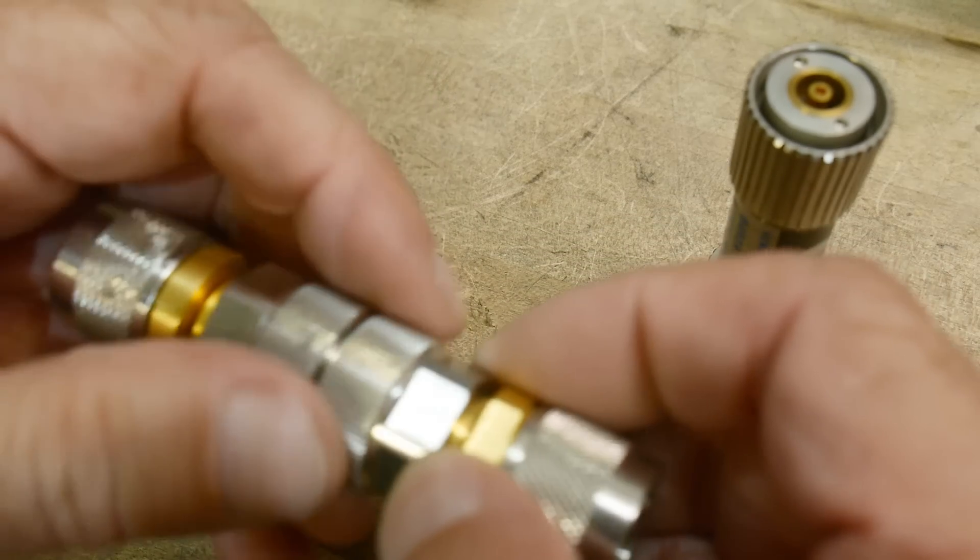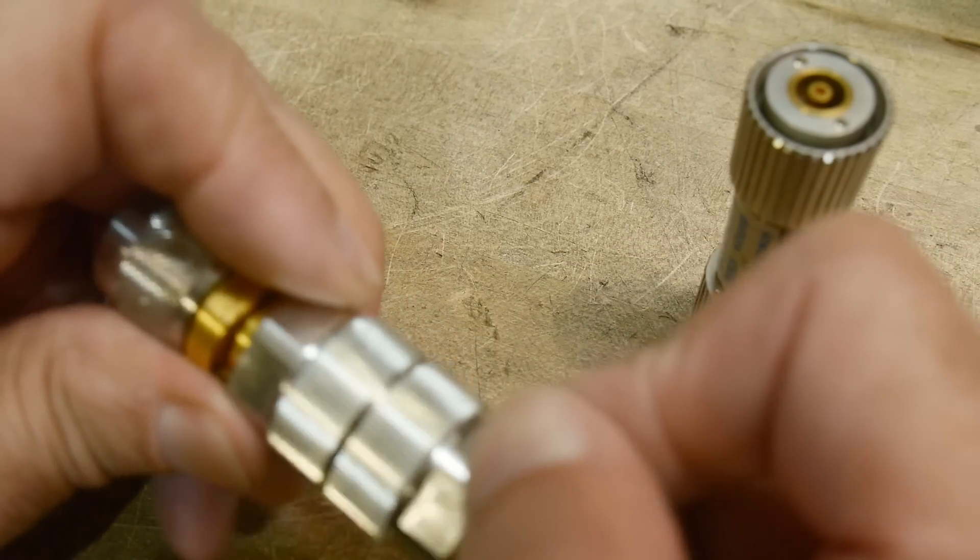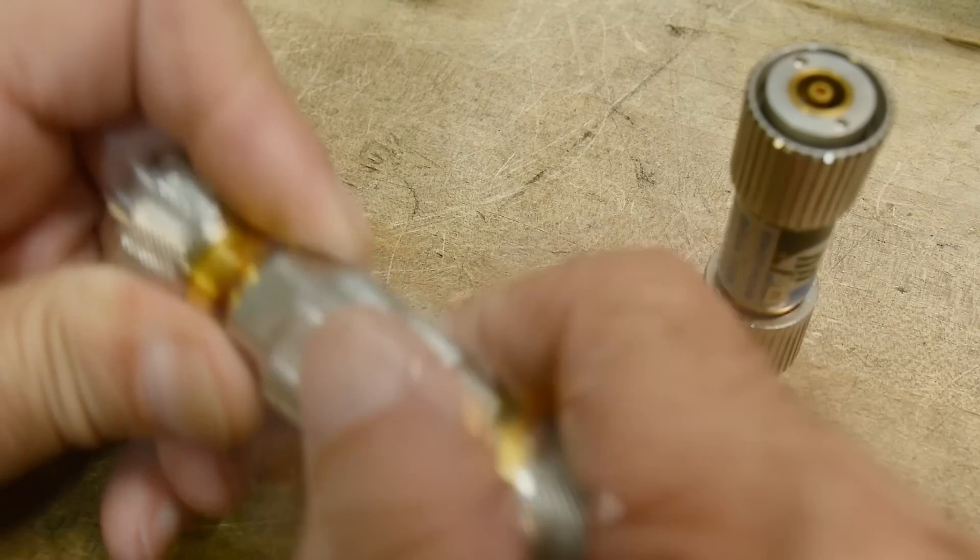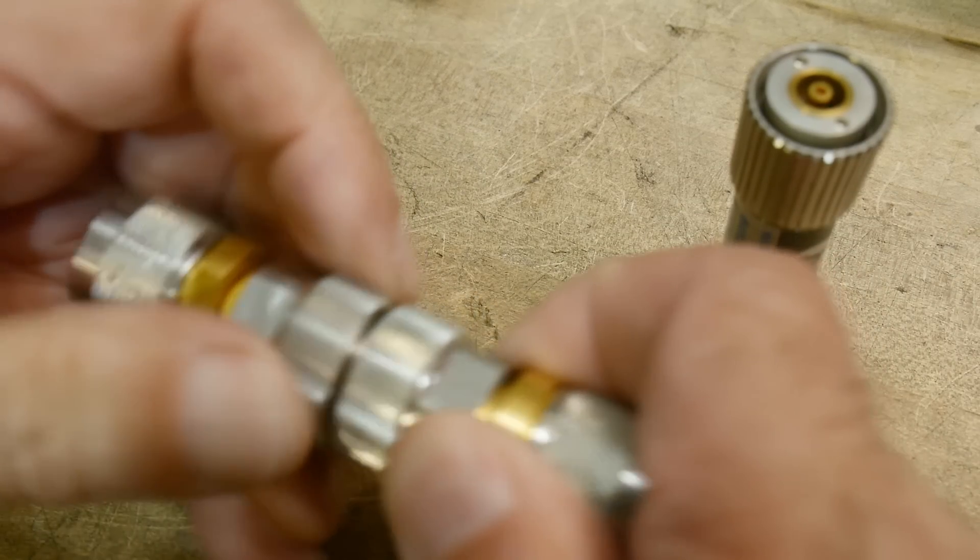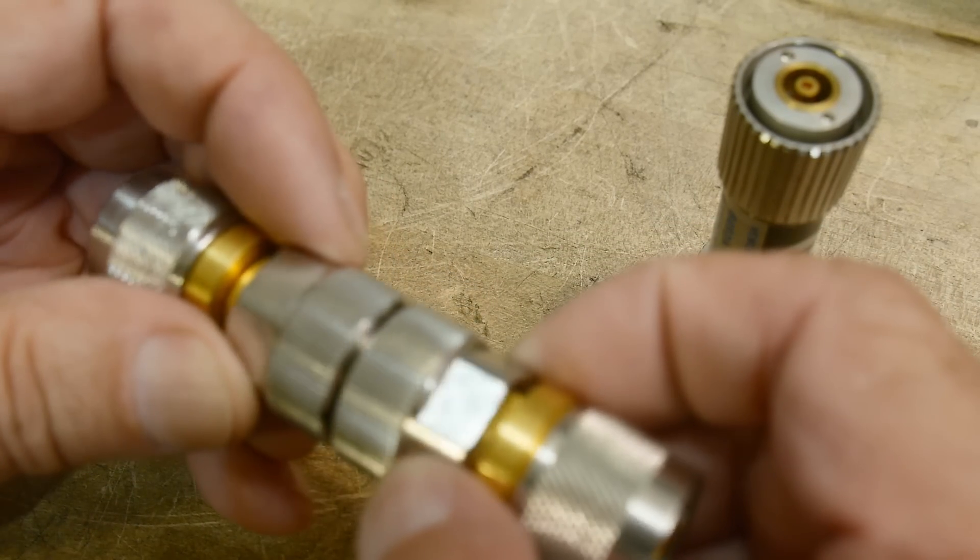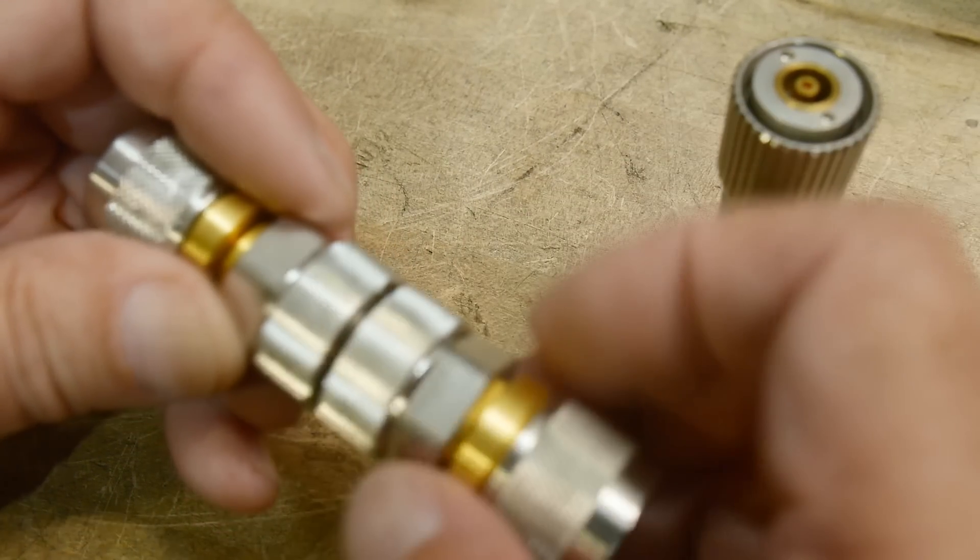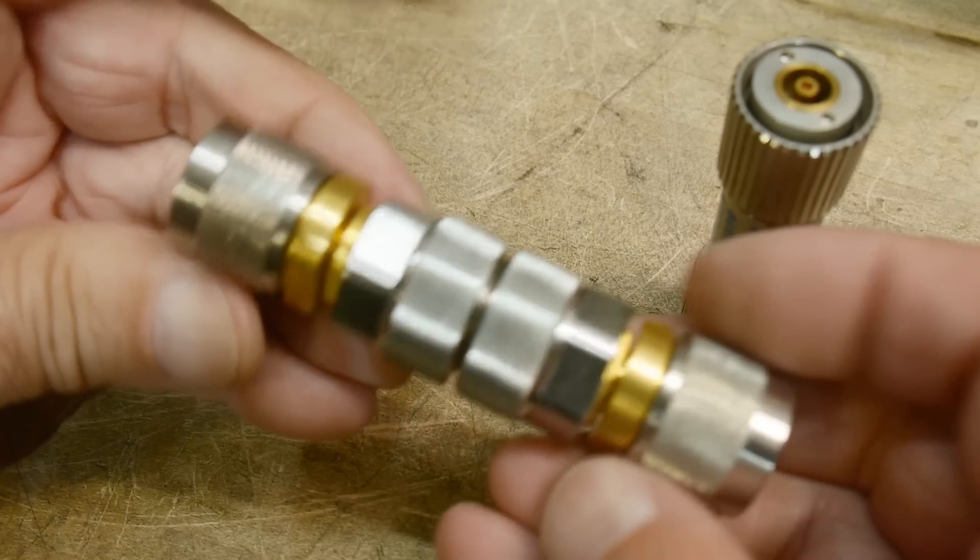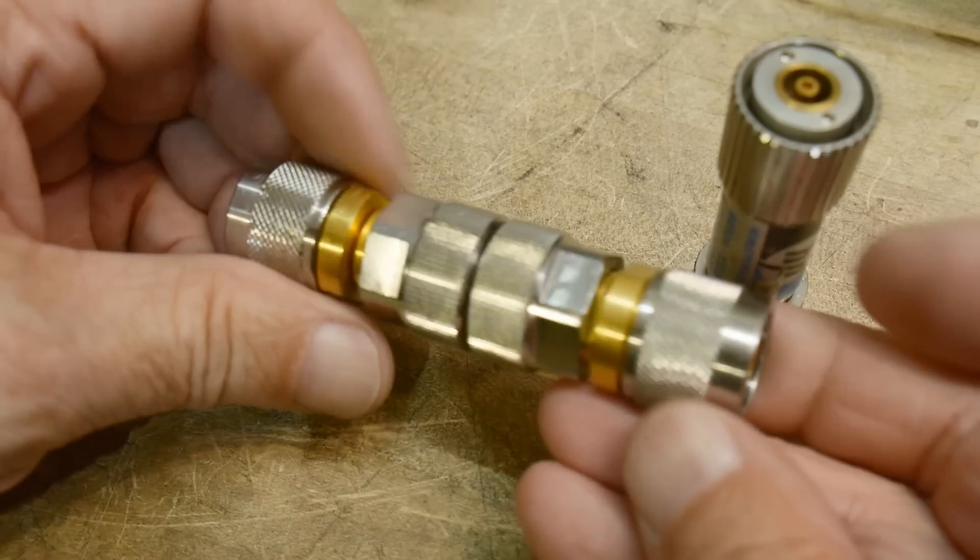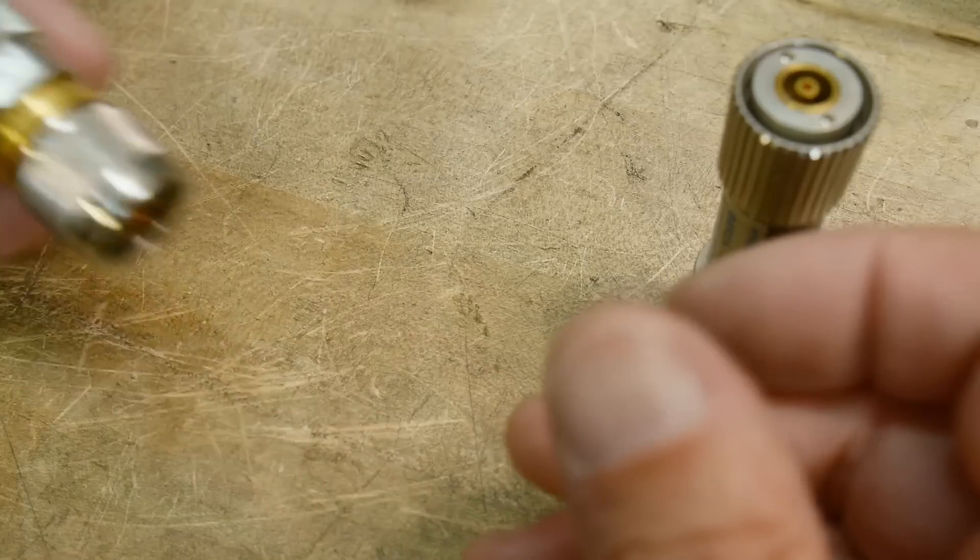So we could actually try these things out. Those are nice and, oops, this one's spinning out. Oh, that's right, that thing can spin. Yeah, so these are nice and solid now. So we could put that on the VNA and sweep it. Maybe we'll do that.